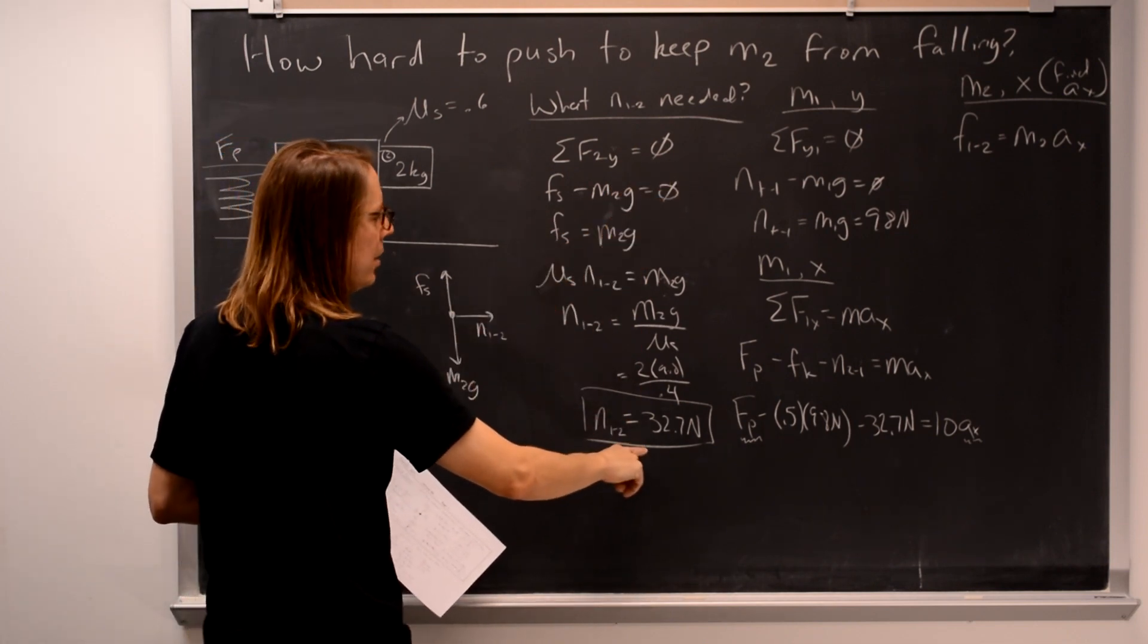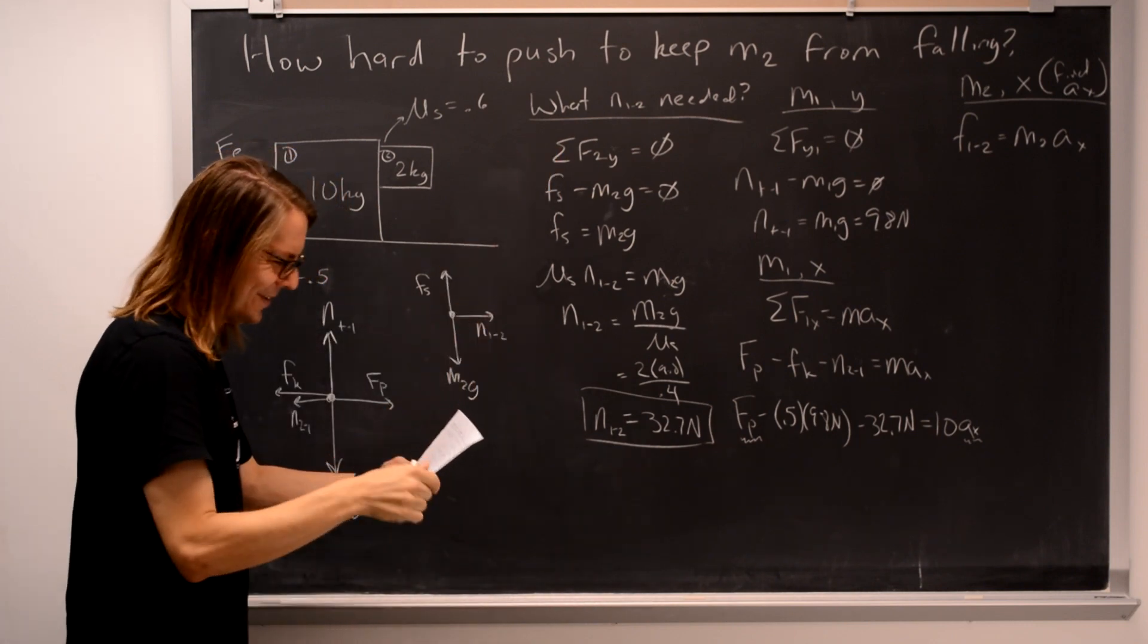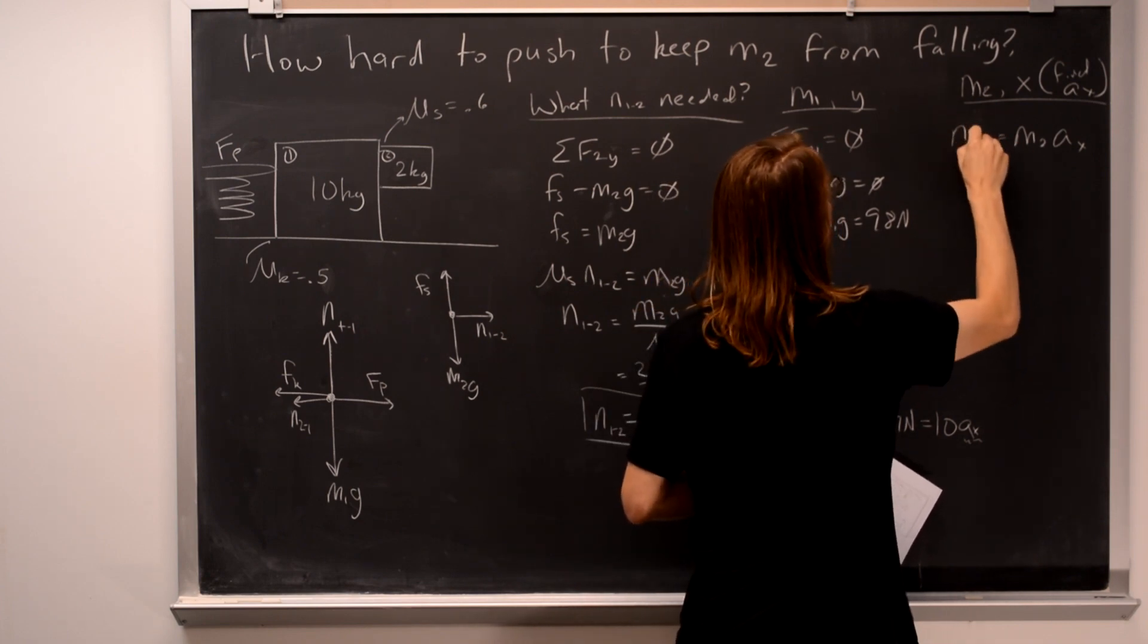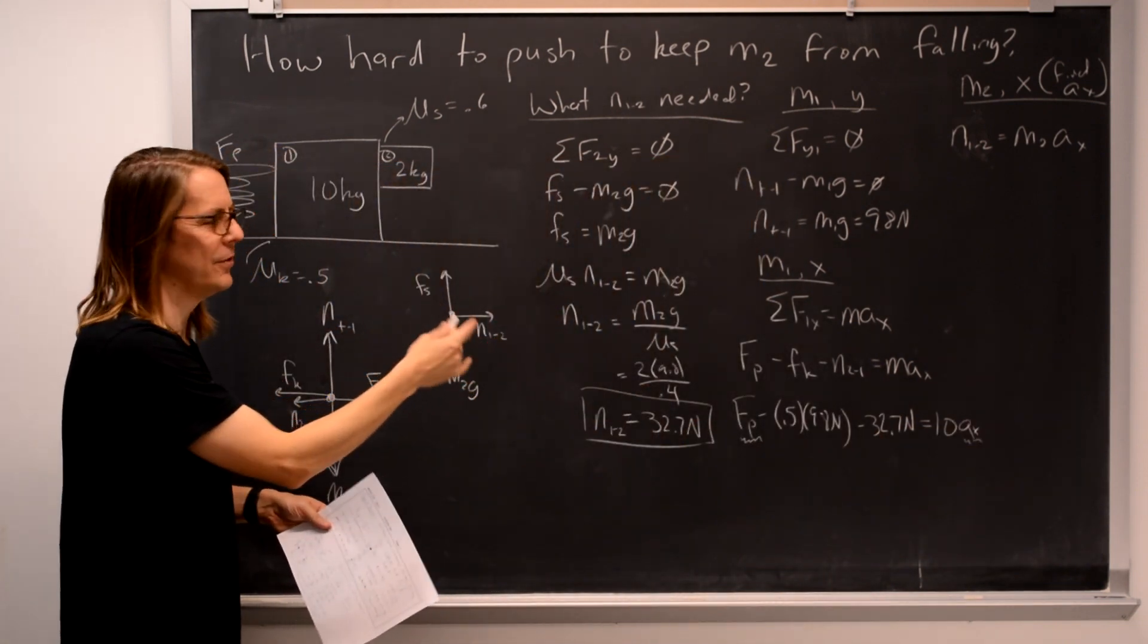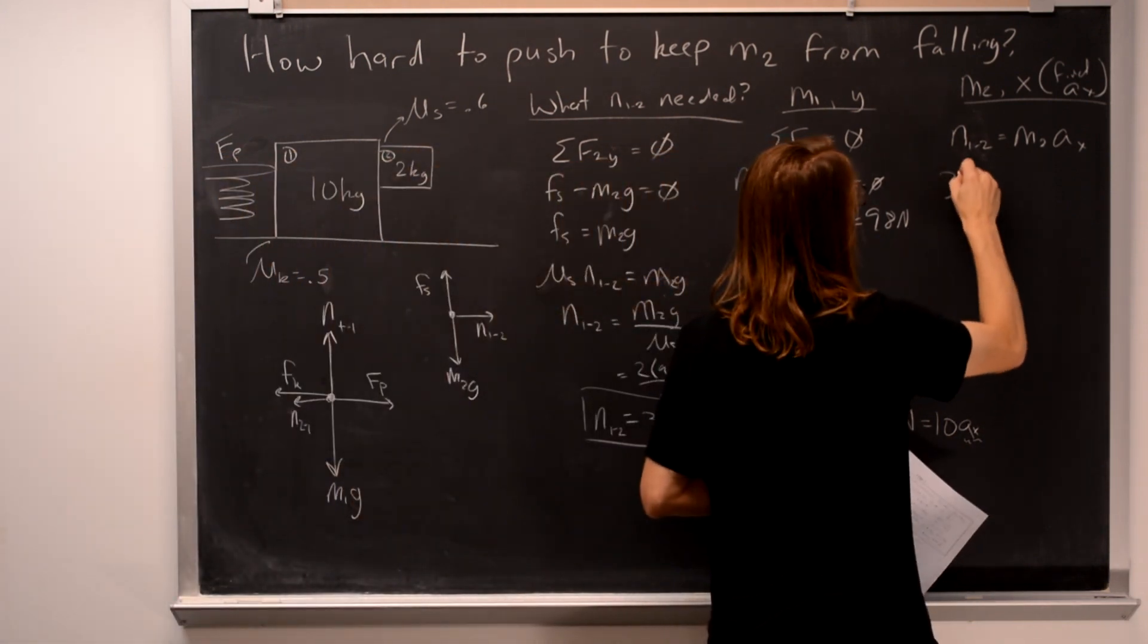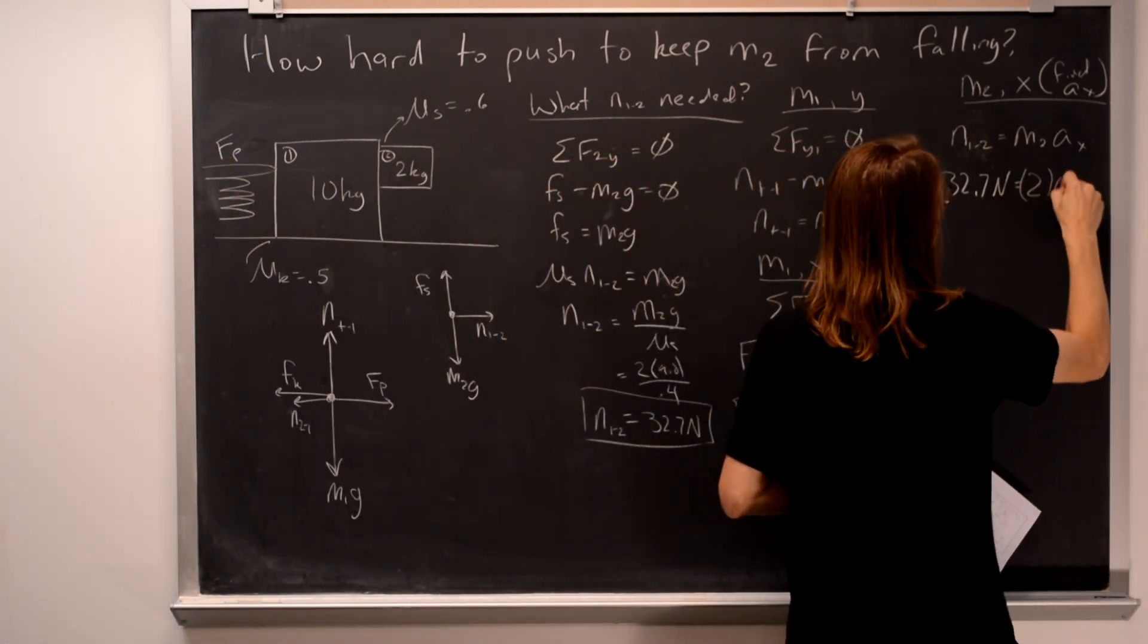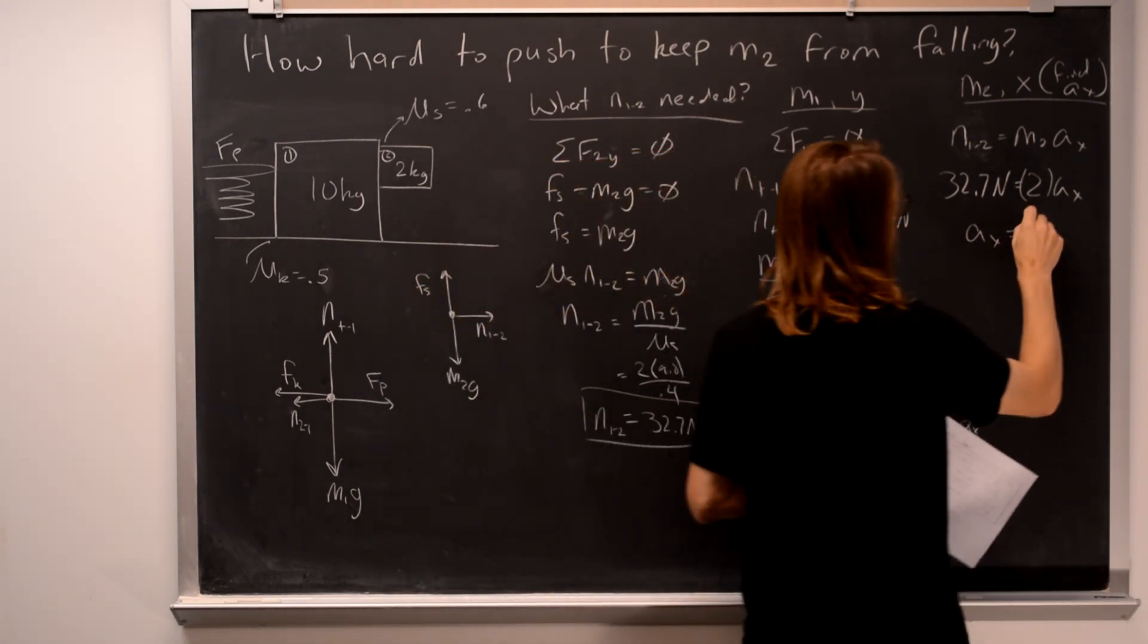It's simply normal force of 1 on 2 equals this mass times the acceleration. That's the only force in that direction. So the normal force of 1 on 2 equals the mass of 2 times the acceleration of x. And they have the same acceleration because they're touching and they're one unit moving together. It's the normal force 1 pushing on 2. We know it's 32.7 newtons. And the mass of 2 is 2 kilograms times ax. So we have the acceleration. What you need is 16.35 meters per second squared.